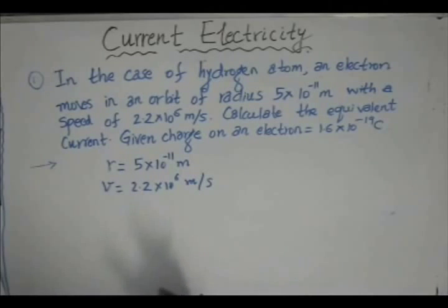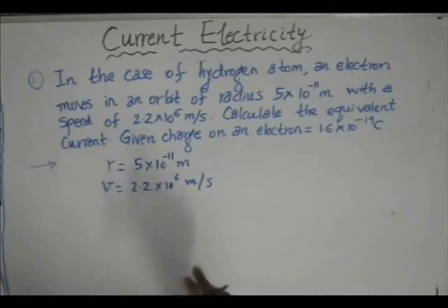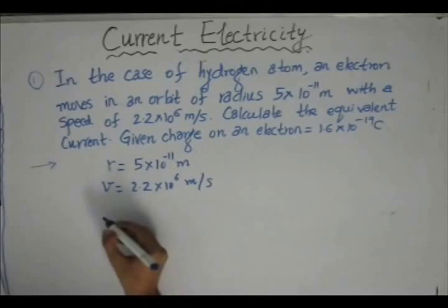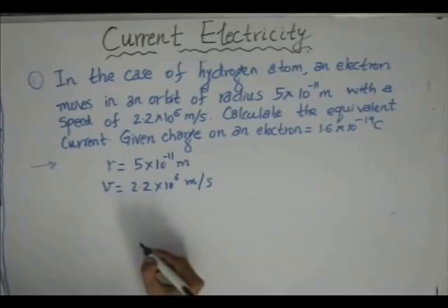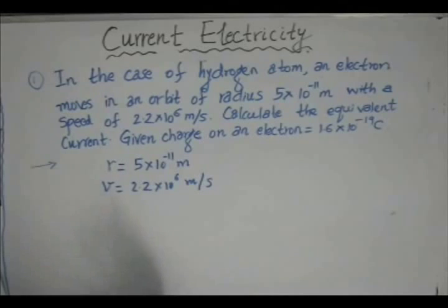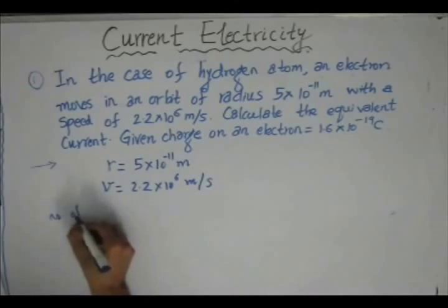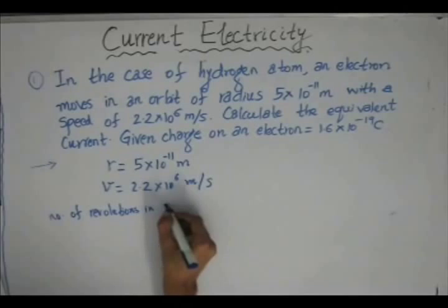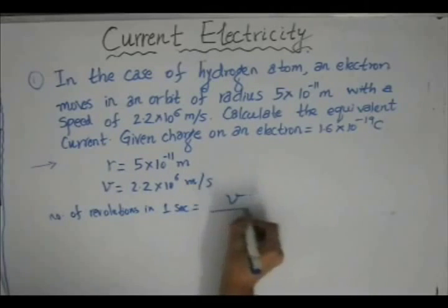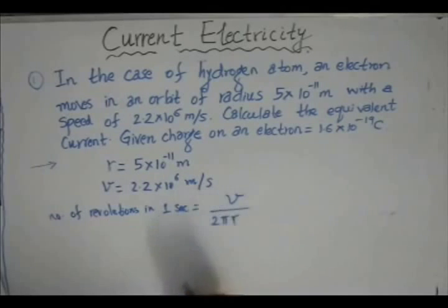Since the electron in the hydrogen atom is moving in a circular orbit, in one revolution it will cover a distance of 2πr, where r is 5 into 10 to the power minus 11 meter. So, if we want to find the number of revolutions per second, the number of revolutions in one second would be v divided by 2πr. This gives us the number of revolutions an electron completes in one second.